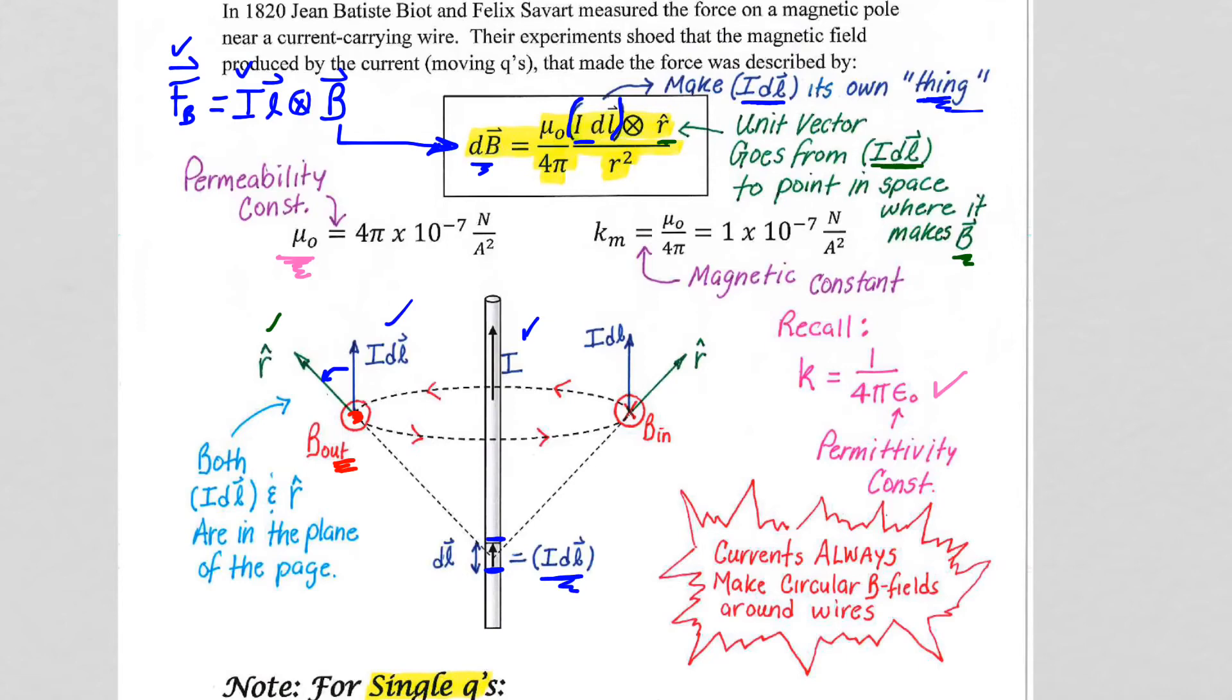And you can see here, since it's annotated, pre-annotated for you, that when we do the IDL cross R hat, so R hat points in the direction again to where the B field will be produced. We draw them from the common origin, as we just did, IDL cross R hat.